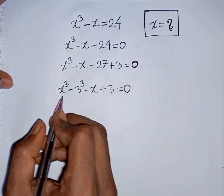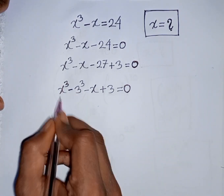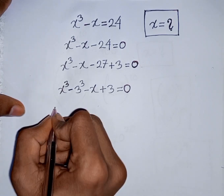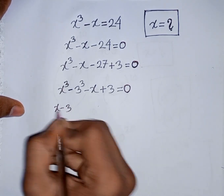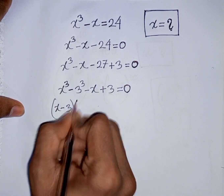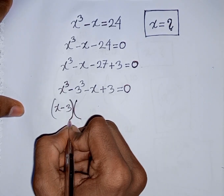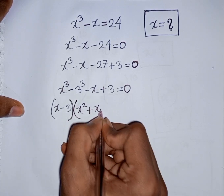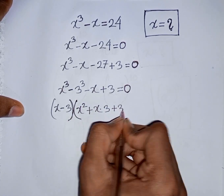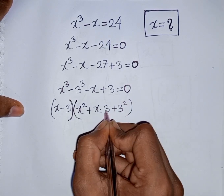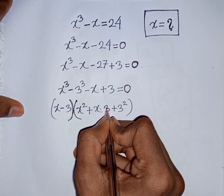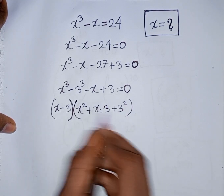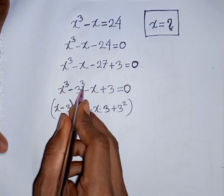Here you can apply the formula of a³ minus b³, where a is x and b is 3. According to the formula, you can write x minus 3 times x² plus x times 3 plus 3². That means a minus b times a² plus ab plus b². This is the formula of a³ minus b³.